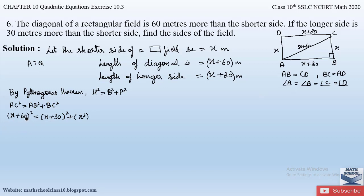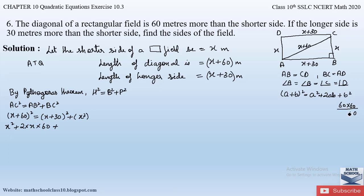The (a + b)² formula gives a² + 2ab + b². For the left side, a = x and b = 60, so we get: x² + 2·x·60 + 60². Now 60² = 60 × 60 = 3600.